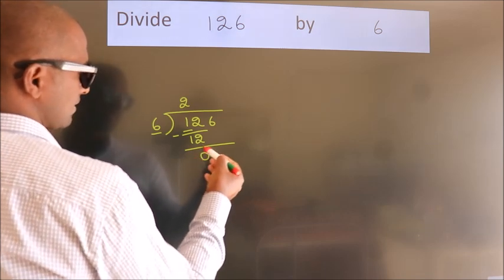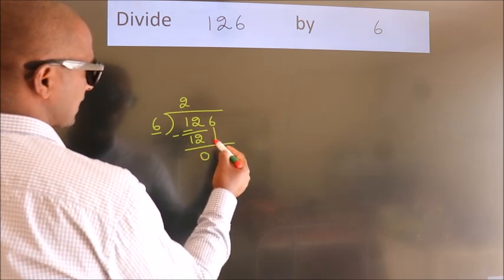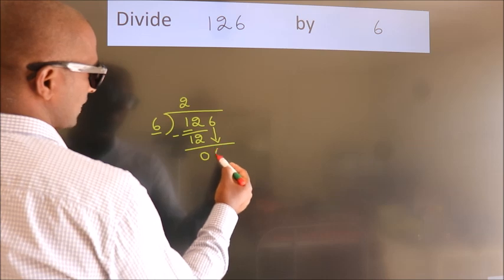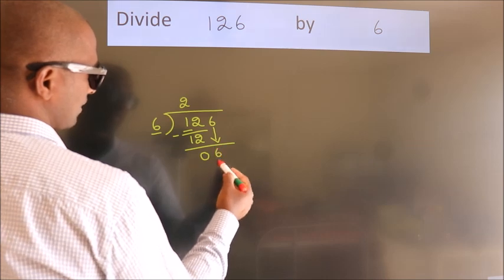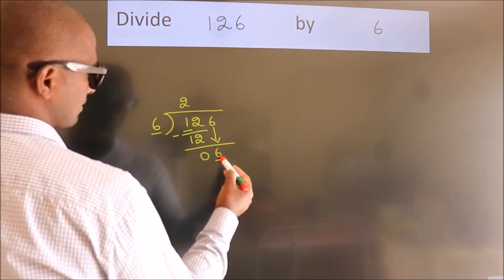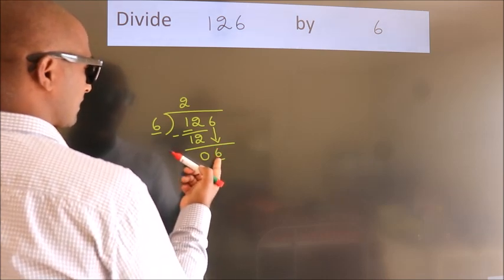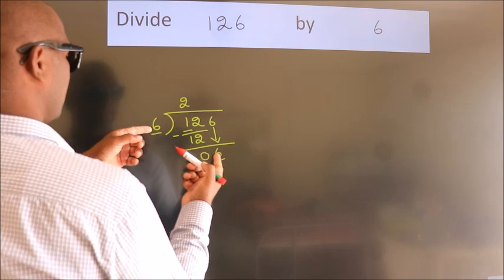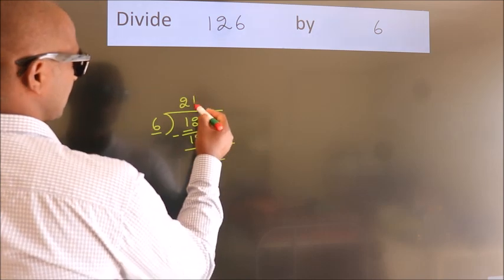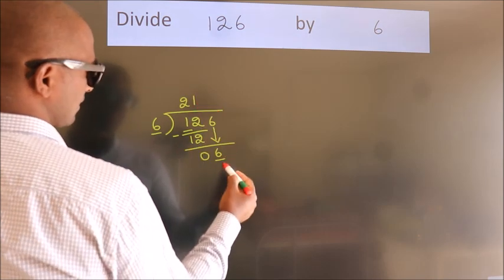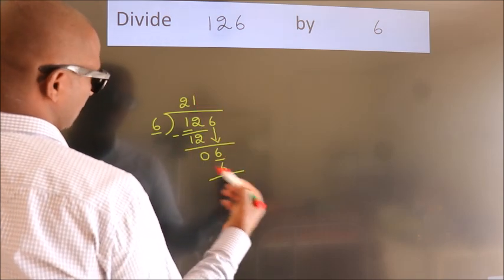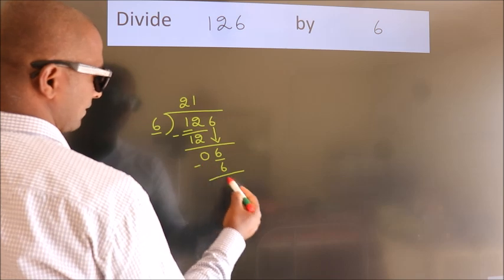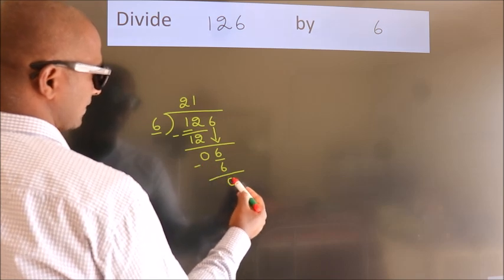After this, bring down the beside number — so 6 down, so 6. When do we get 6? In the 6 table, 6 ones are 6. Now we subtract and we get 0.